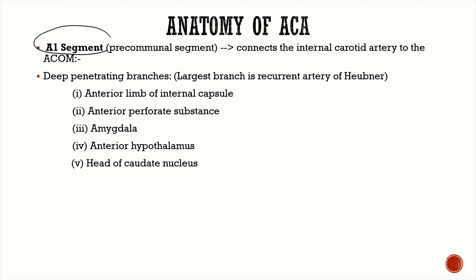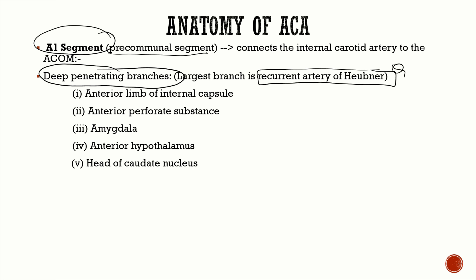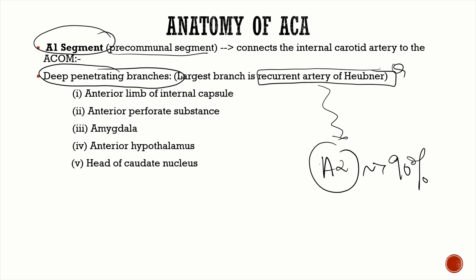The A1 segment, or pre-communal segment, is proximal to the ACOM and gives deep penetrating branches, just like the lenticulostriate branches from the MCA. The largest deep penetrating branch is known as the recurrent artery of Heubner — this is a very important MCQ point. Remember: the recurrent artery of Heubner comes from the A2 segment 90% of the time, and only 10% of the time from the A1 segment. All other deep penetrating branches are from A1.